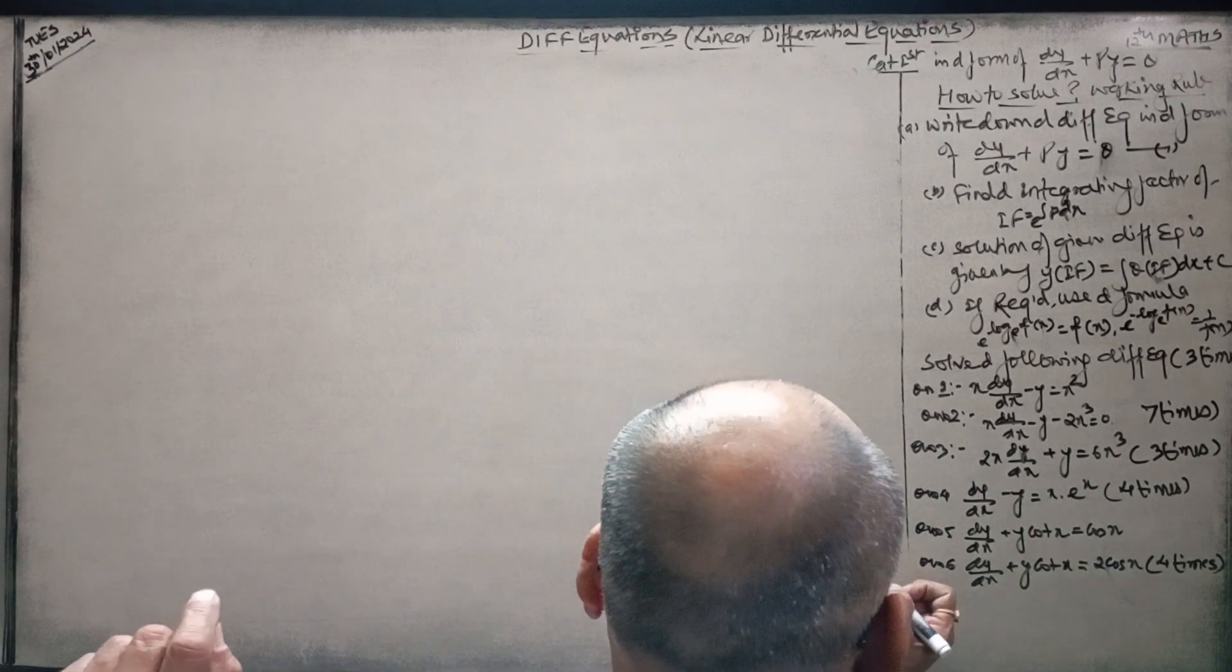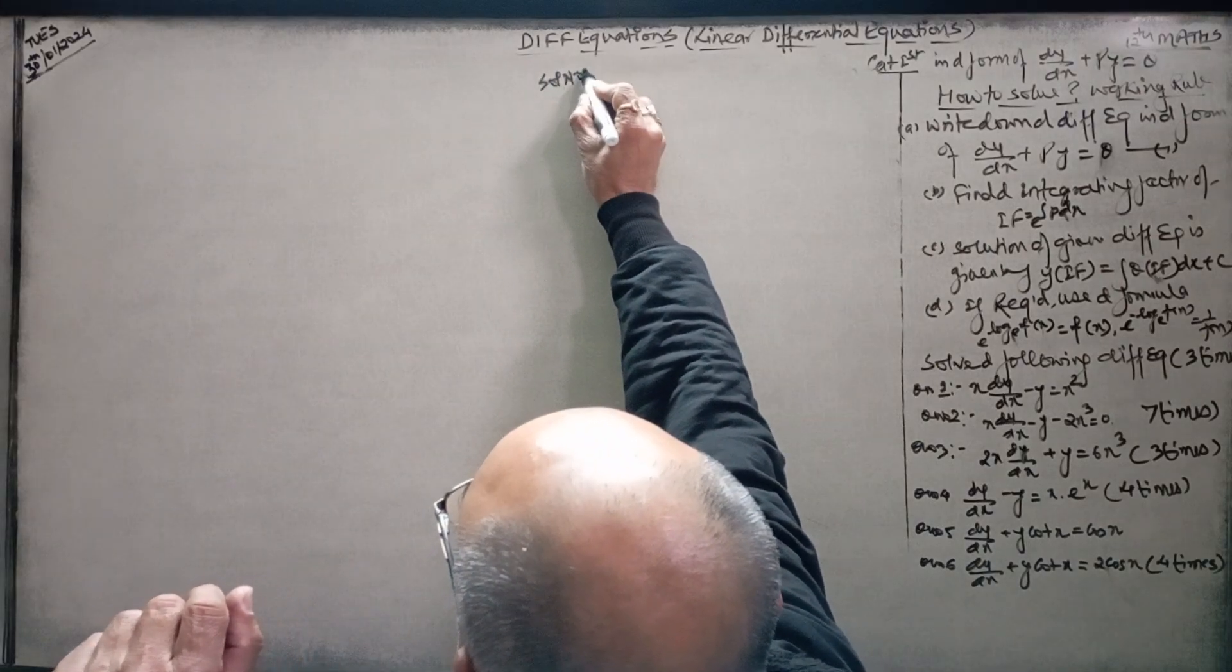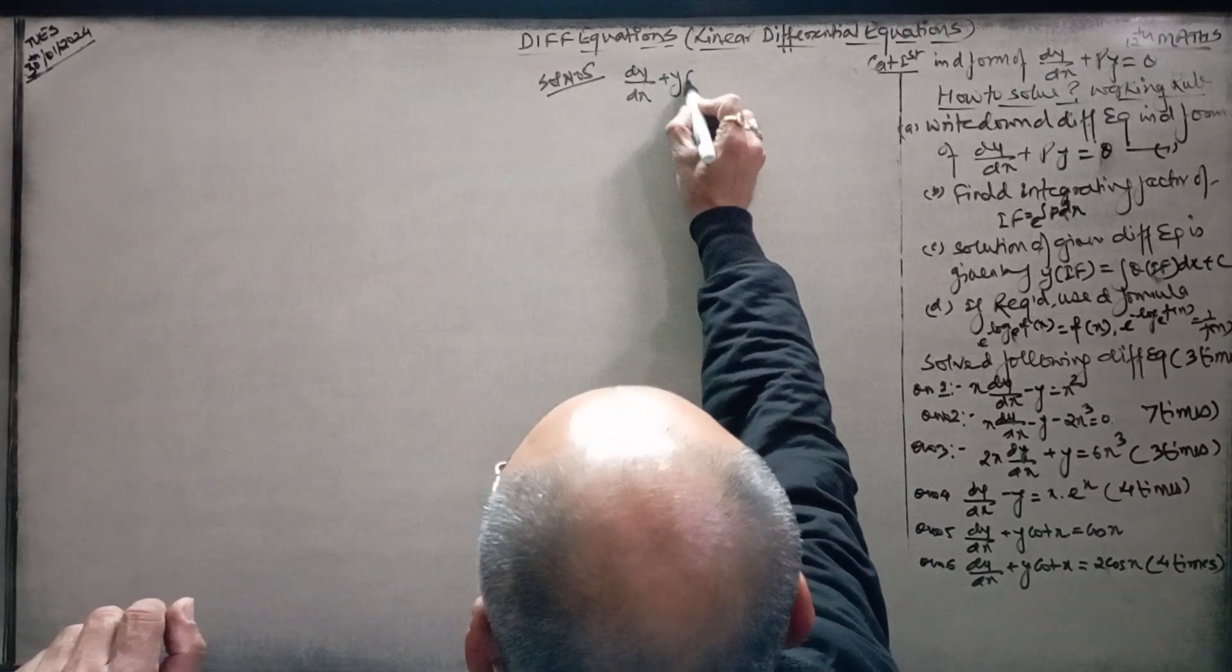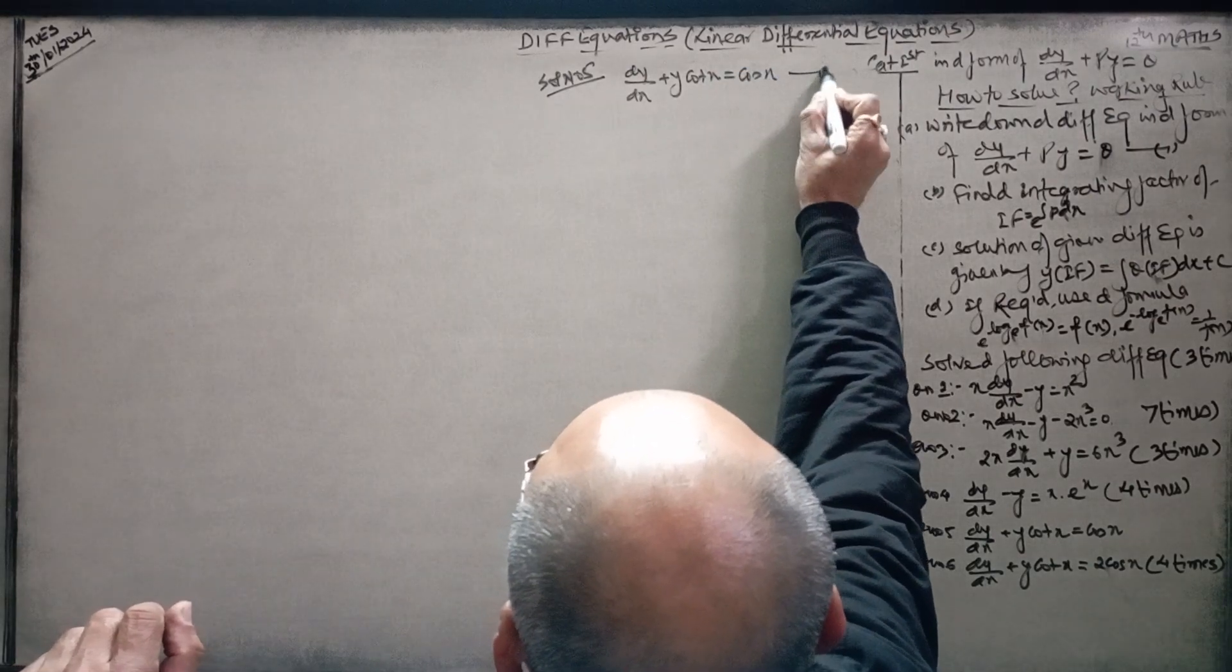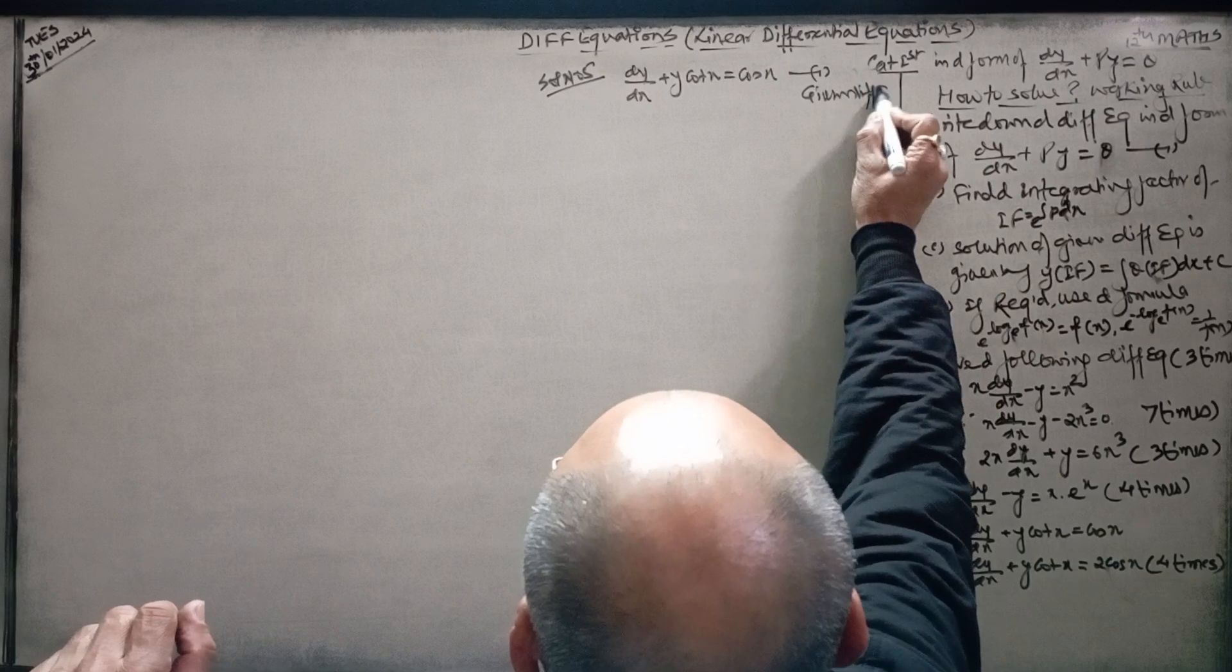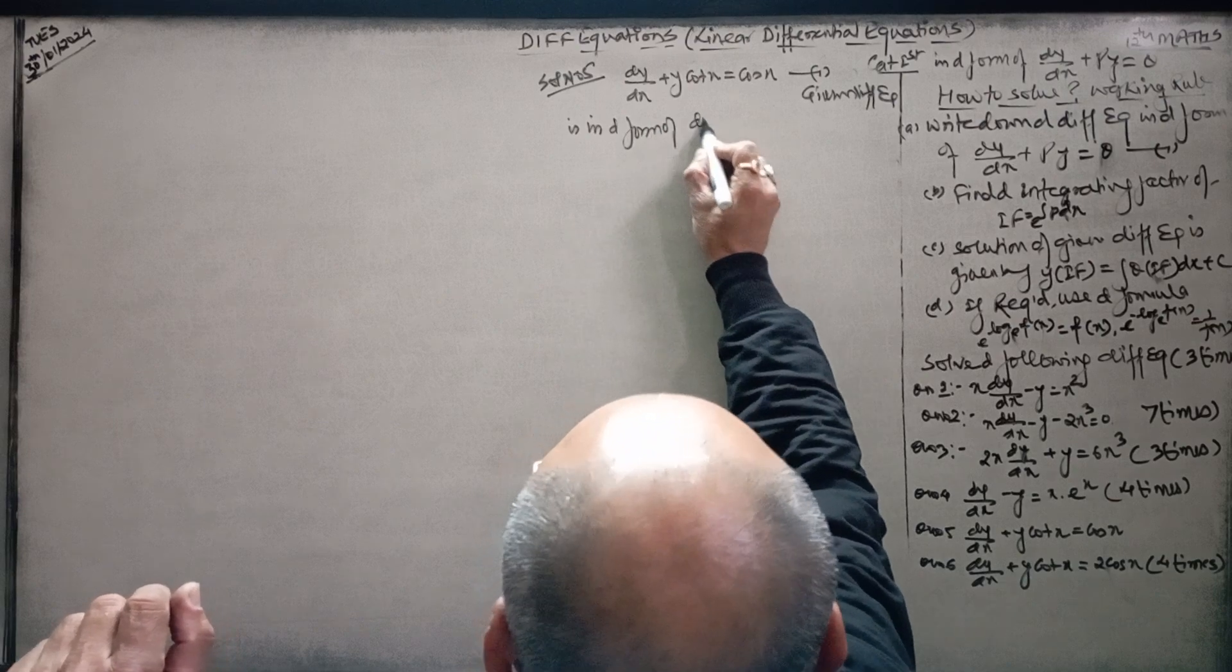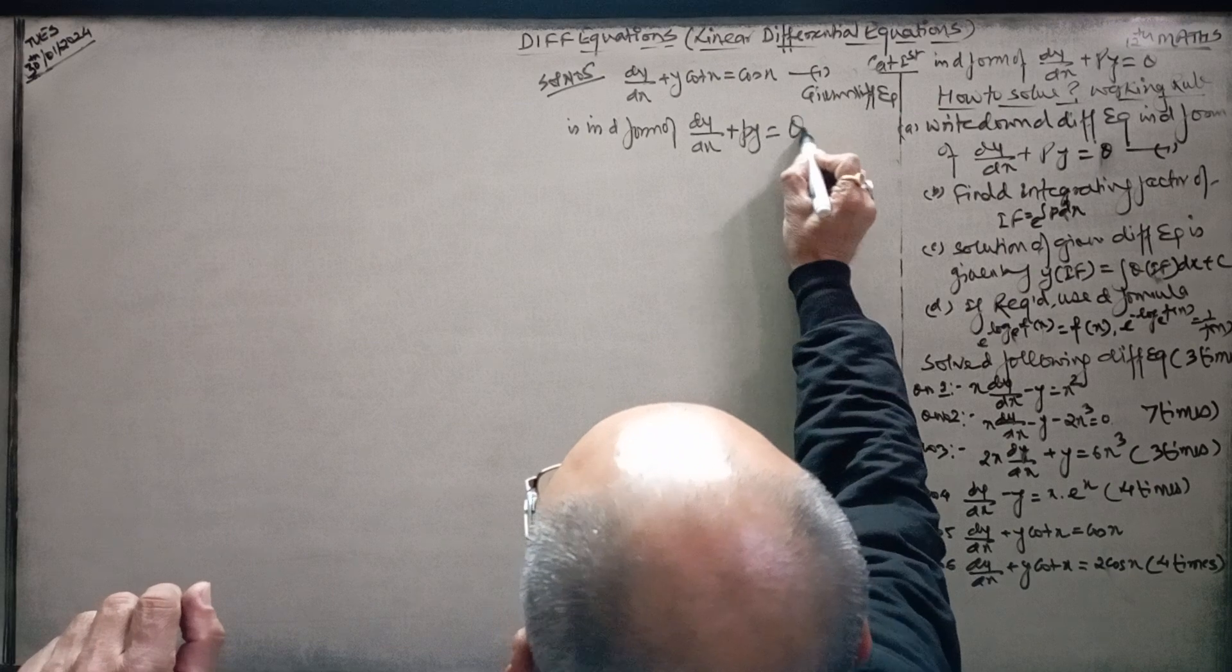Solution number A5. This is dy/dx plus y cot x equal to cos x. This is the given differential equation, which is in the form of dy/dx plus py equal to q.